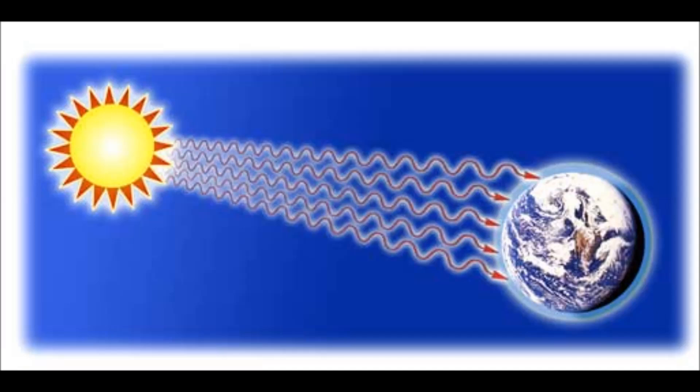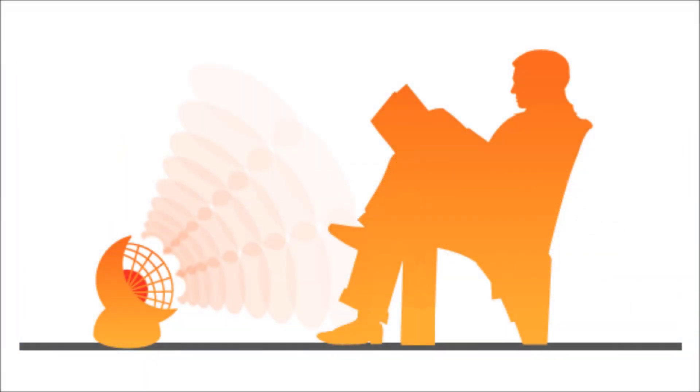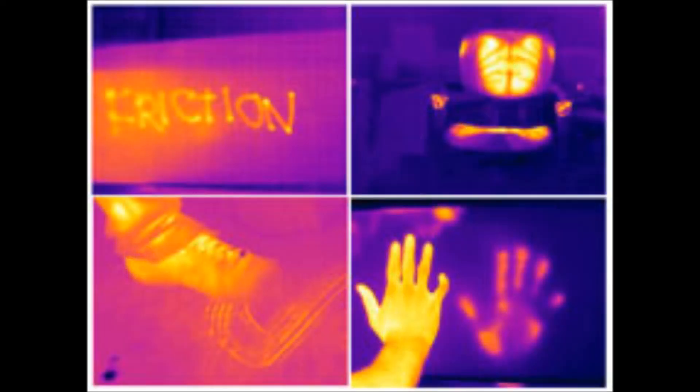The temperature also affects the wavelength and frequency of the radiated waves. Objects at typical room temperatures radiate energy as infrared waves. Being invisible to the human eye, we do not see this form of radiation. An infrared camera is capable of detecting such radiation.